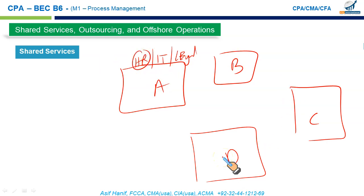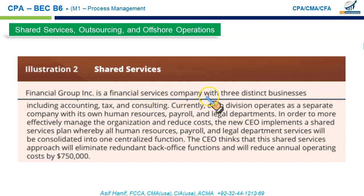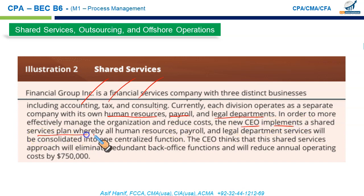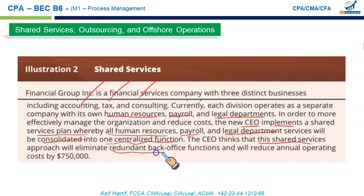To illustrate: Financial Group Incorporated has three distinct businesses — accounting, tax, and consulting — each operating as a separate company with its own HR, payroll, and legal department. The new CEO implements a shared services plan consolidating all HR, payroll, and legal services into a centralized function. This shared service approach eliminates redundant back-office functions and is estimated to reduce annual operating costs by $750,000.